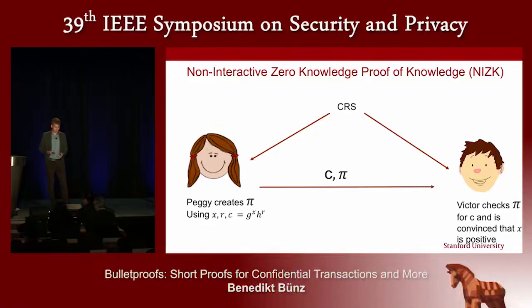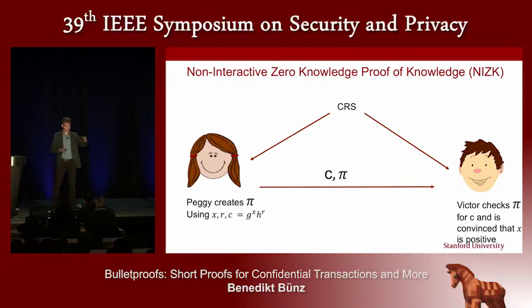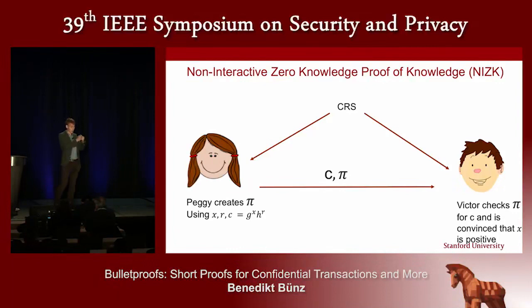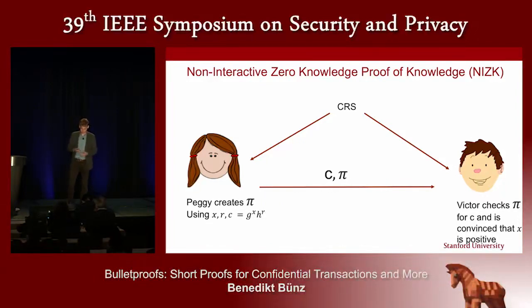A prover (Peggy) can use a common reference string available to both the prover and the verifier, and create a proof that the committed value she committed to is actually positive. Victor, or anybody, can check the proof for this commitment and be convinced that the value x is positive. But it's zero-knowledge in that Victor doesn't learn any other information — most importantly, he doesn't learn what the precise amount is.